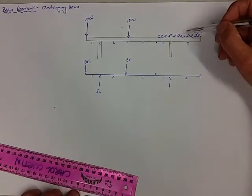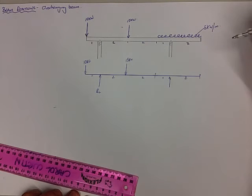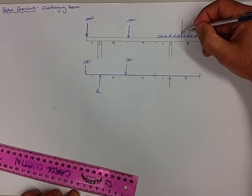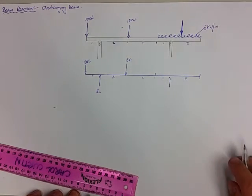Now what we want to do is convert our UDL into a single point load. And we do know that the single point load will act directly in the middle or at the centroid or the centre of the UDL.